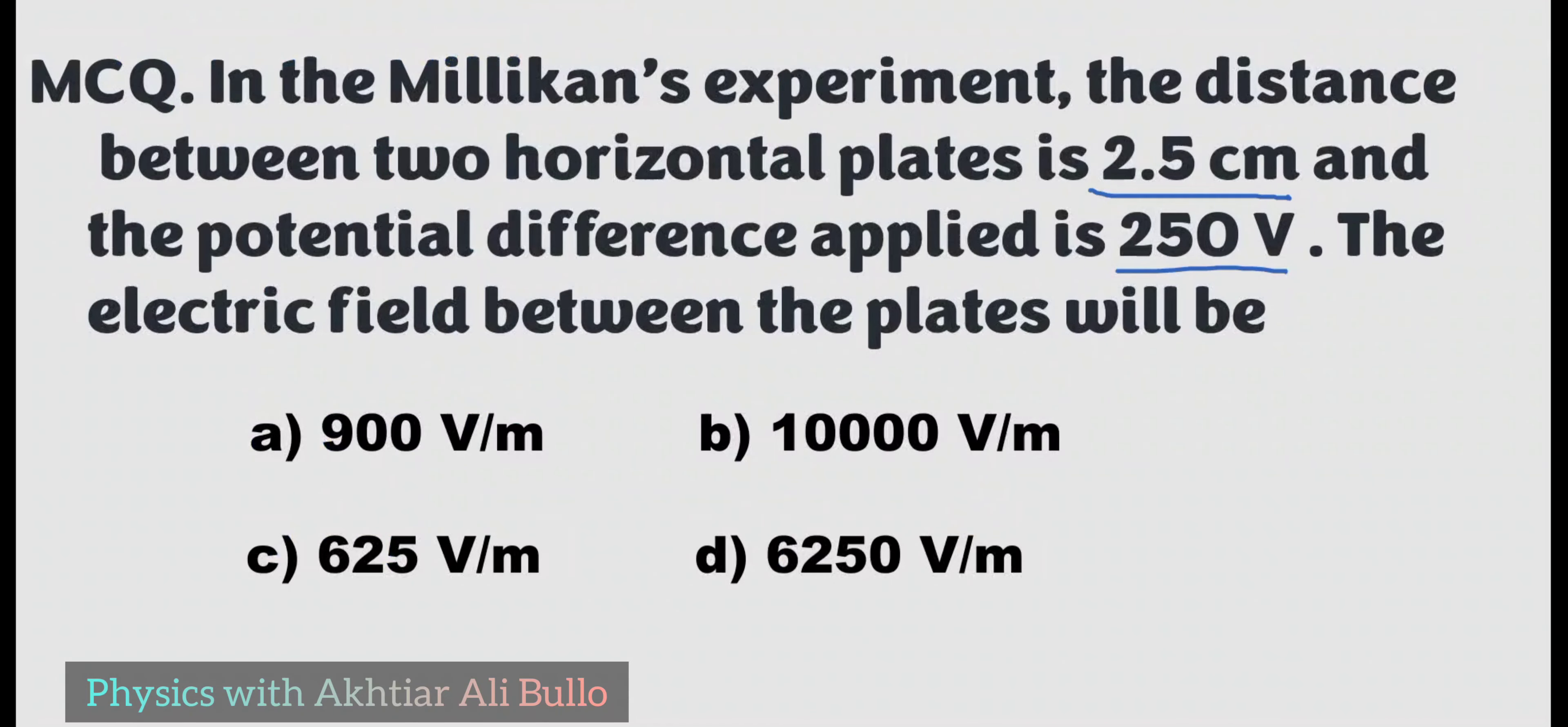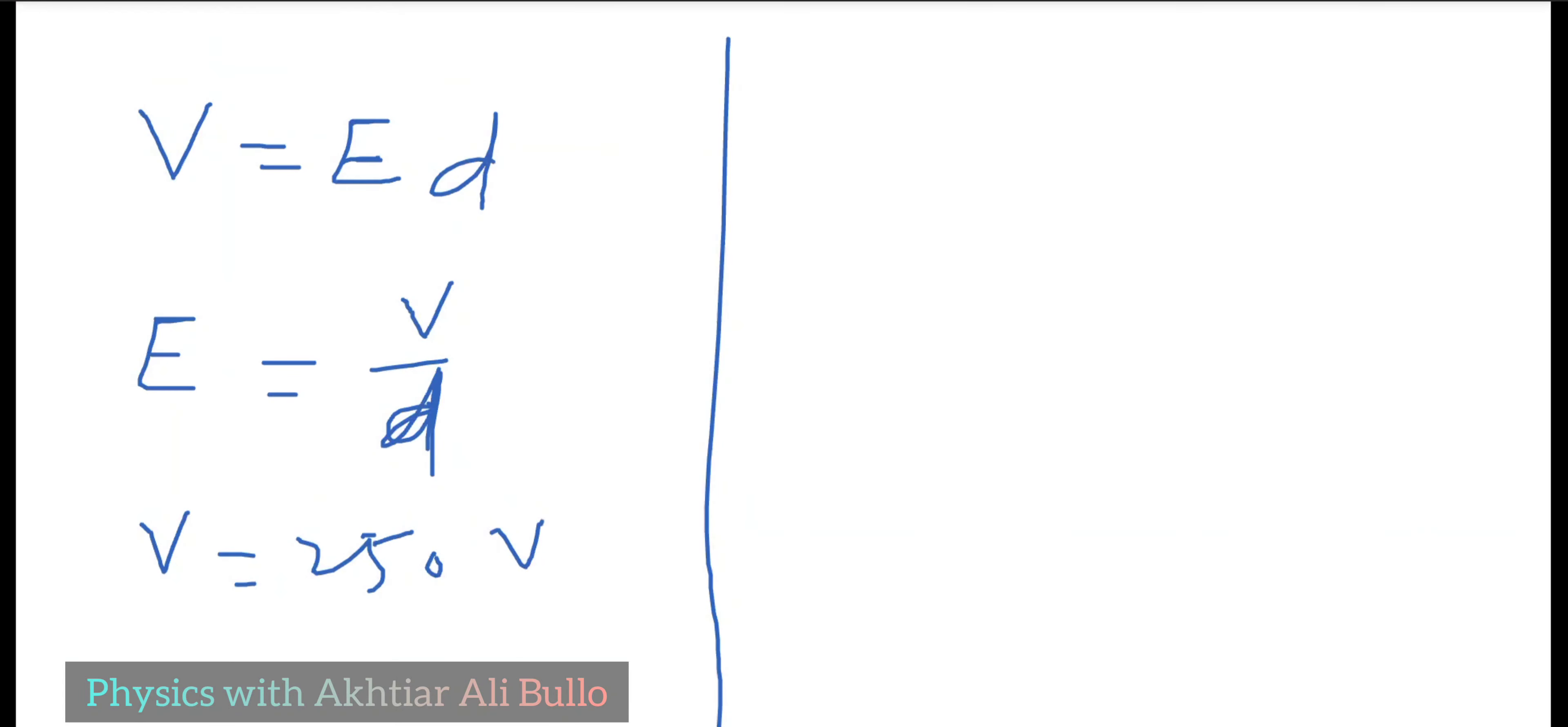D is given as 2.5 centimeters, which can be converted into meters as 2.5 × 10^-2 meters, which can also be written as 25 × 10^-3 meters. By putting the given values, E will be obtained.